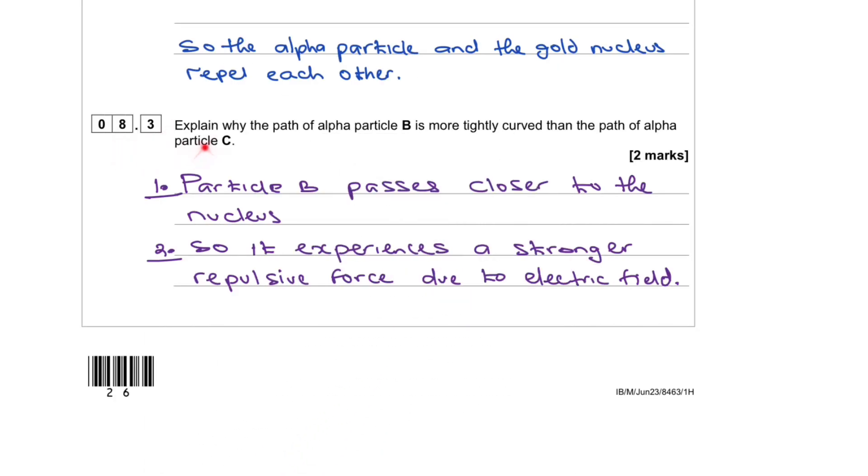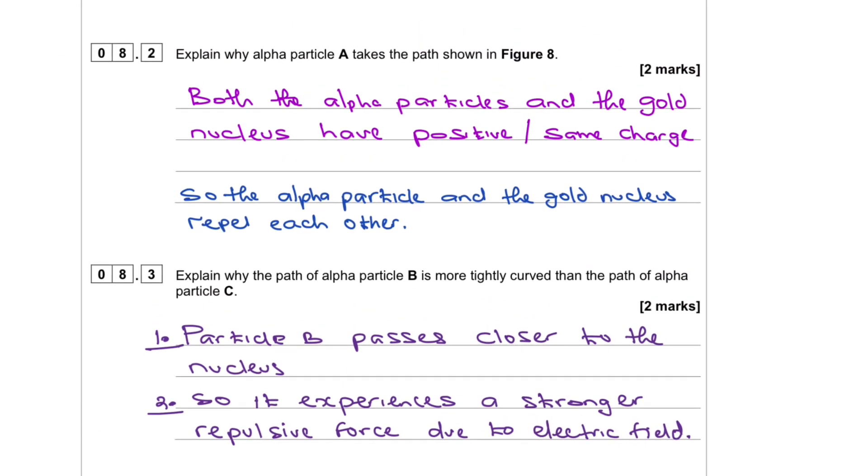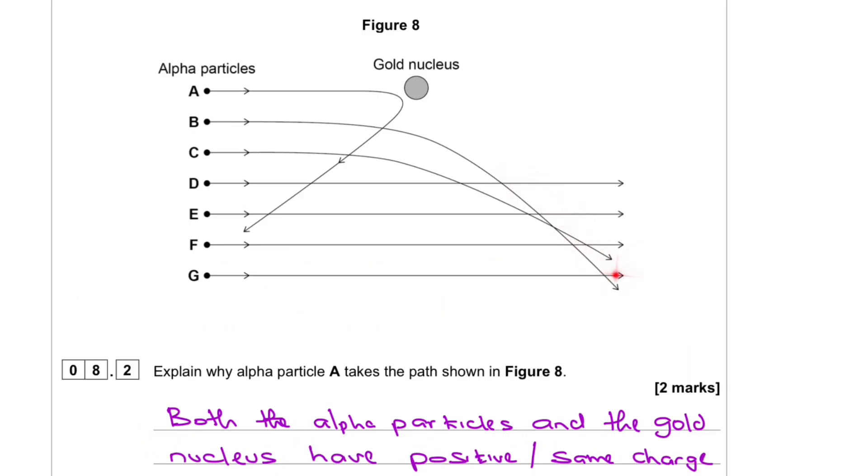8.3. Explain why the path of the alpha particle B is more tightly curved than the path of alpha particle C. If you look at the alpha particle B, you can see that's what they're talking about here compared to C which goes like that.